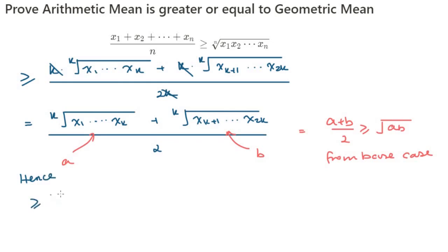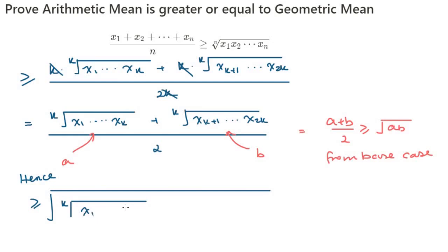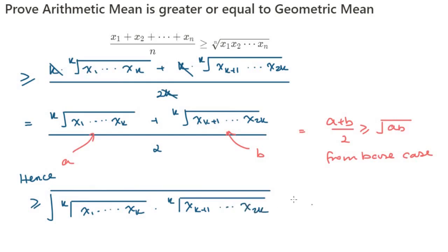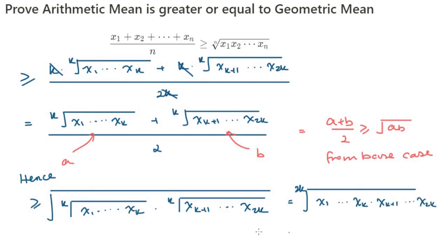Therefore, the left-hand side of the hypothesis is greater than or equal to the square root of [ᵏ√(x₁x₂⋯xₖ) · ᵏ√(xₖ₊₁xₖ₊₂⋯x₂ₖ)], which is equal to the 2kth root of x₁x₂⋯xₖ · xₖ₊₁xₖ₊₂⋯x₂ₖ.